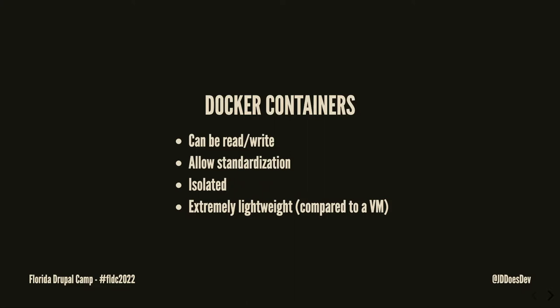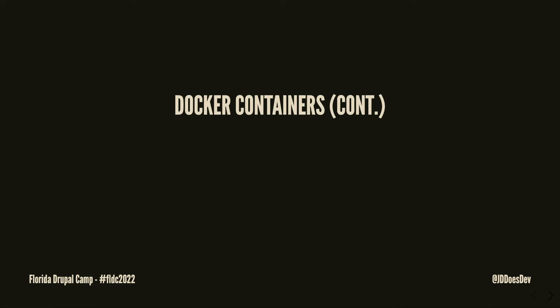Containers share a kernel. Every container running at one time shares a kernel, and that virtualizes the operating system so you can run isolated processes — whereas virtual machines virtualize an entire machine from the hardware level up. Containers are also portable: you can share an image or a Dockerfile to build an image, and it can be recreated identically anywhere that Docker is available.